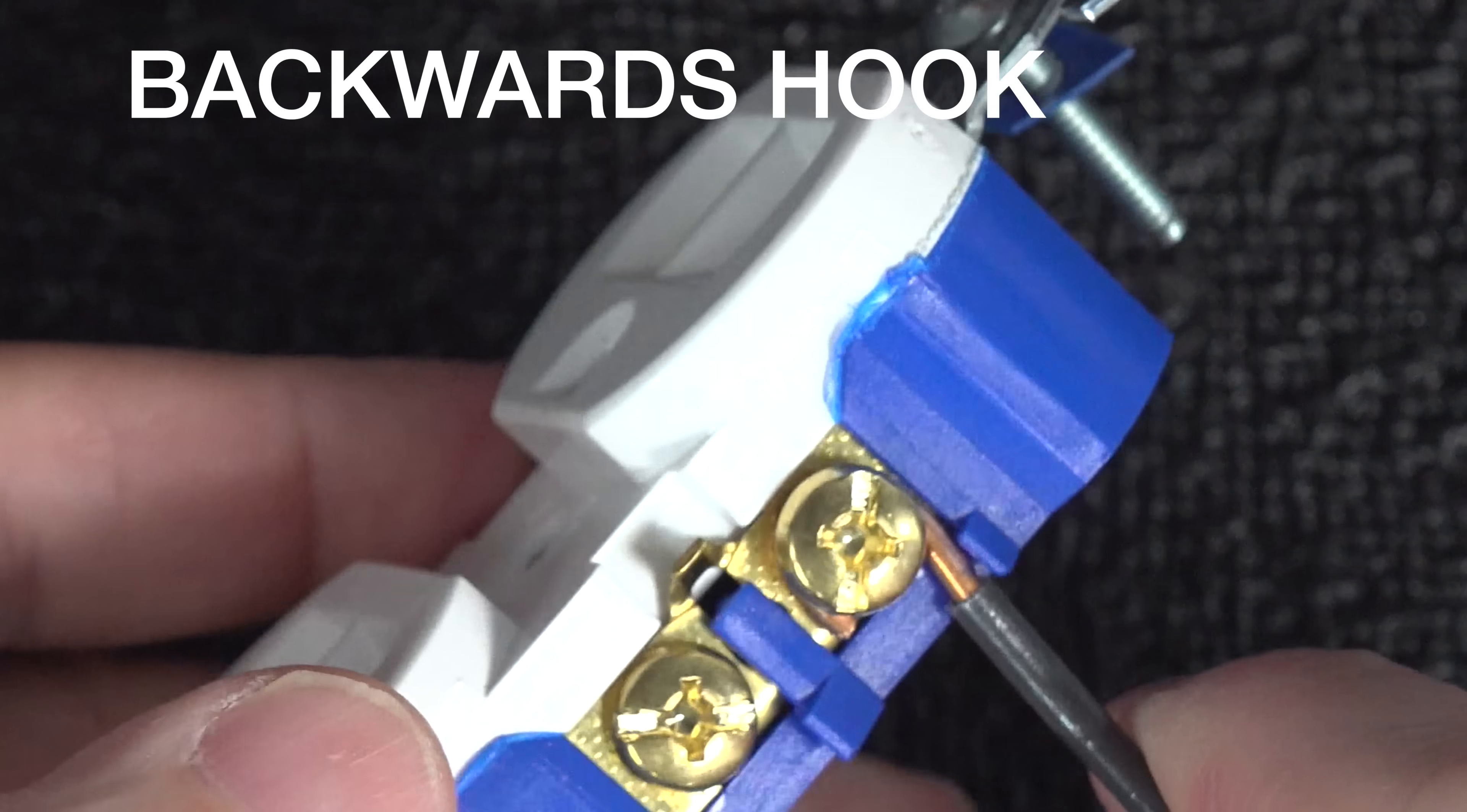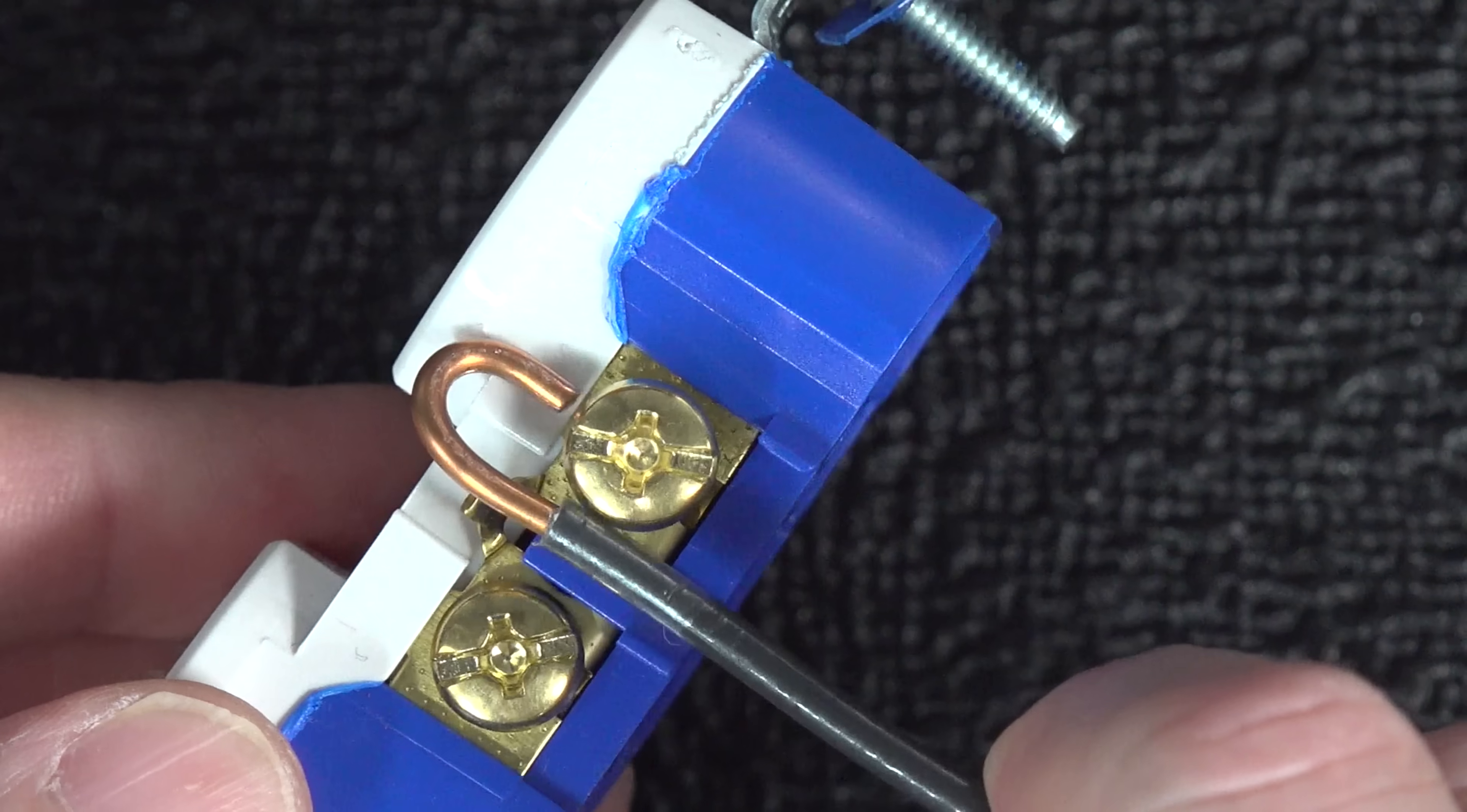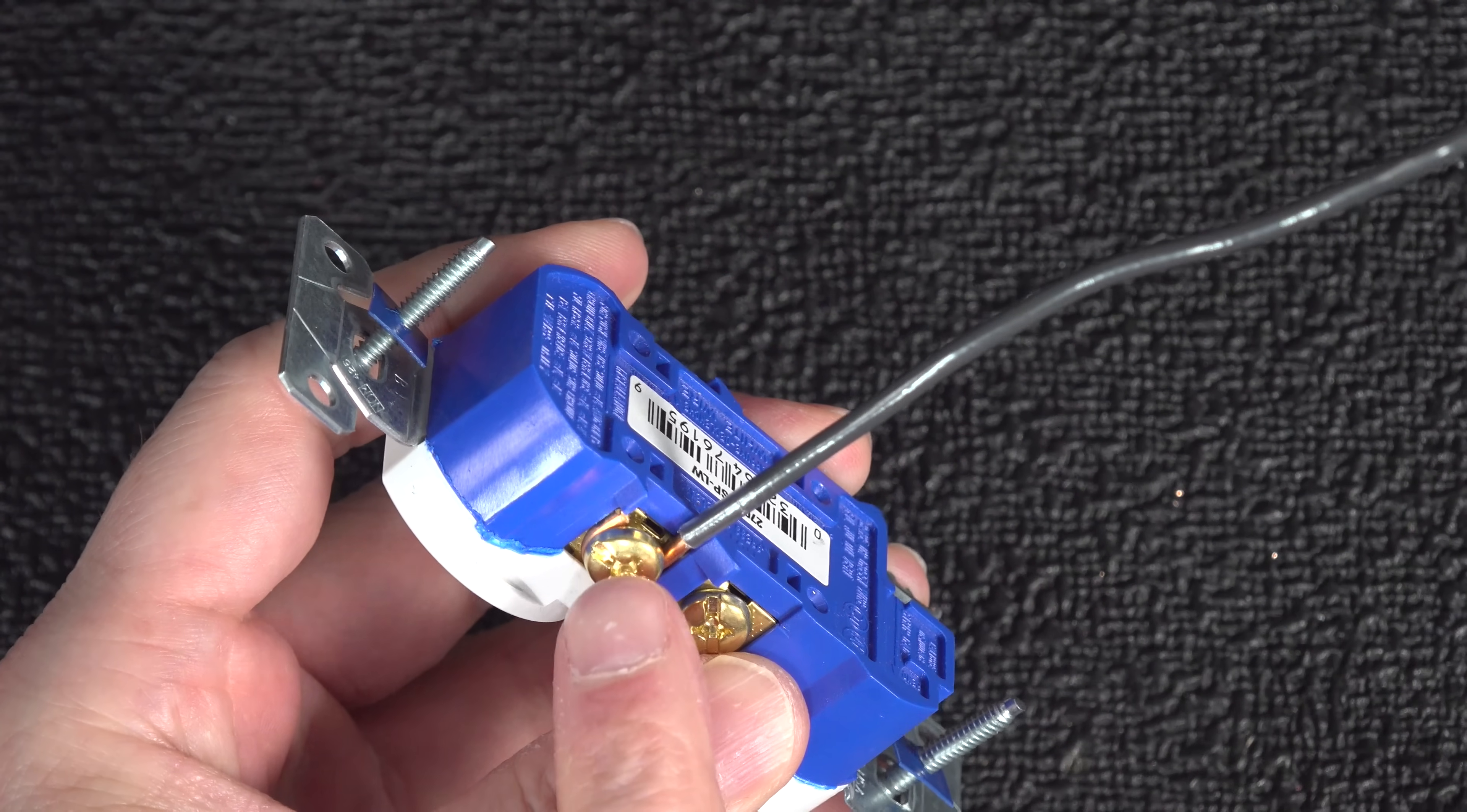Now it matters which direction that hook is facing because that screw tightens down screwing clockwise and you want the end of the hook to be facing to the right. And now as I tighten that screw down, it's actually going to pull the wire in a little bit tighter and that's going to give you a secure connection. If I have that hook facing to the left, as I screw it down, it's actually going to force the wire out and that can make it slip off.